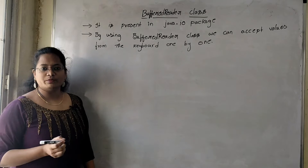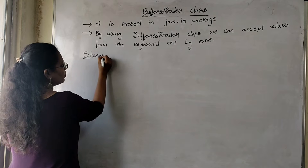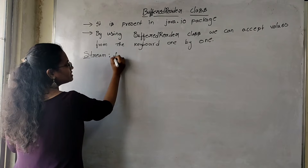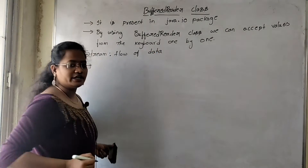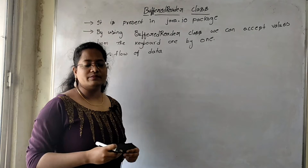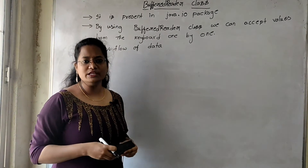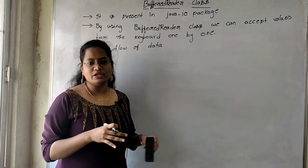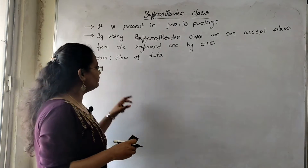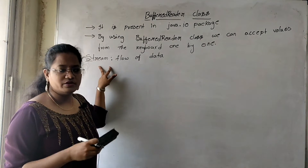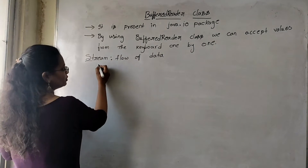But before going to BufferedReader Class, first of all you need to know the definition of a stream. What is a stream? Stream is nothing but a flow of data. If you want to send the water from one place to another place, we are using pipes. By using pipes, we are sharing the water from one place to another place. In the same way, stream is nothing but flow of data — you are sending the data from one place to another place by using stream. It is of two types.